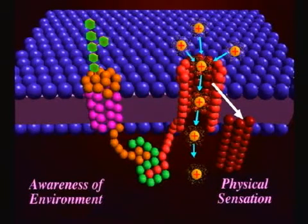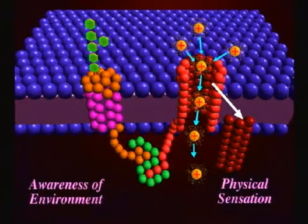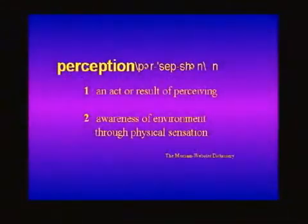Is it true that when the channels or output devices start to create a physical response, they create a physical sensation in the cell? So is this what controls the cell, or at least the function within the cell? What is this called? In the dictionary, there is a word for this, and the word is perception — awareness of the environment through physical sensation. So you just saw the labeling of a device that controls the cell. This device is known as perception.